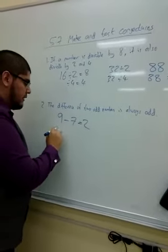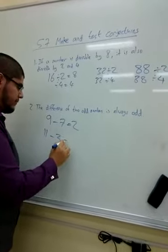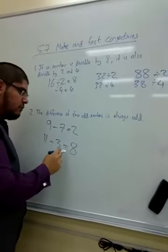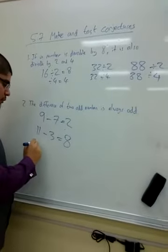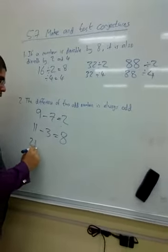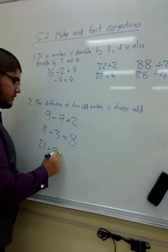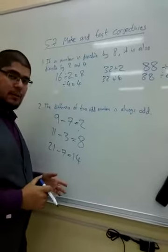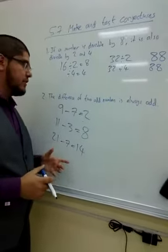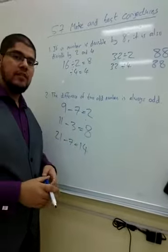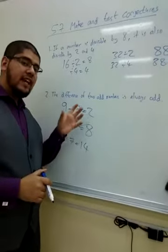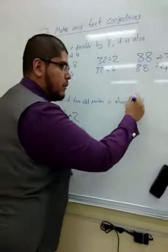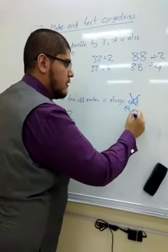Let's do number 1, 11 minus 3, and that gives us 8. Now, this has only backed up the first example. Now, let's do one more. Let's do 21 minus 7, 14. So now I can say I've done enough examples to show that this conjecture is not correct. And we can also change this one to say the difference of 2 odd numbers is always even. And we've proven that to be correct.